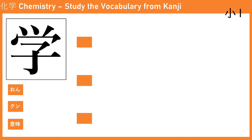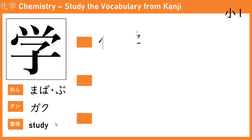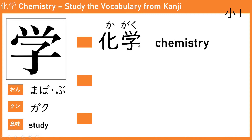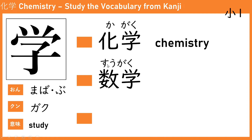The next kanji is 学 (gaku). The onyomi is manabu. The meaning is study. We have seen this one before: 化学 (ka-ga-ku), the study of changes, which is chemistry. The next word is 数学 (su-ga-ku), meaning mathematics — the study of numbers.